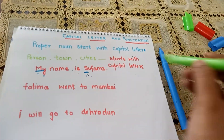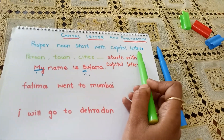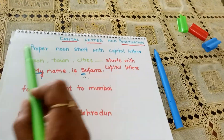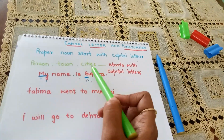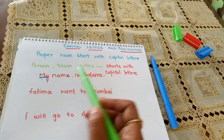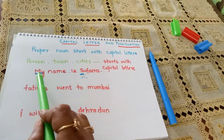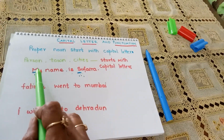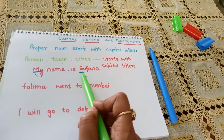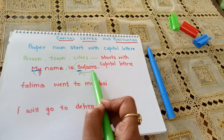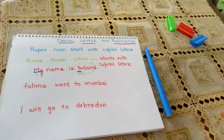Because it's a proper noun. And as I have told you earlier, proper nouns start with capital letters. It may include the name of a person, town, city — anything. My name is Sufaira. 'My' at the start of a sentence — M should be capital, followed by small letters. And again, my name is a proper noun, so it should be written with a capital letter.